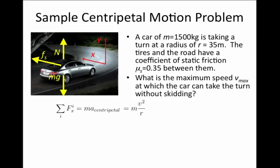Now we simply have to put in what are all the forces in the x direction. There is only one force in the x direction and that's the static force of friction, so we can write that Fs equals mv squared over r.